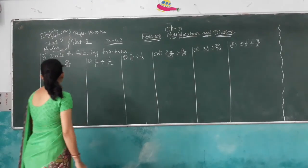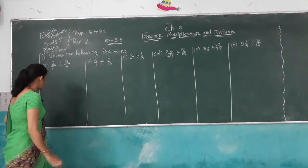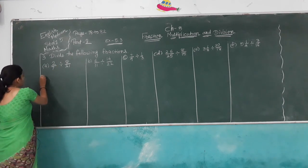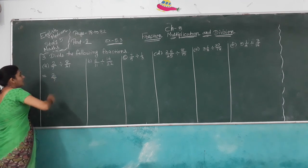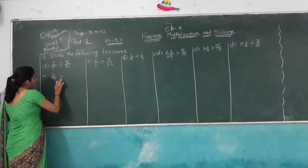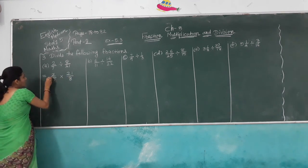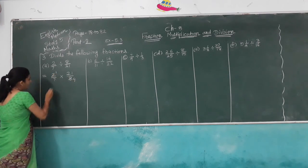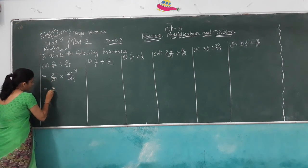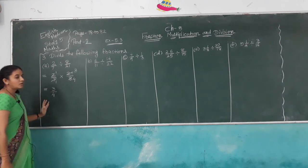Question number 3: divide the following fractions. First problem: 2/7 divided by 8/21. Write 2/7 and multiply by the reciprocal of 8/21, which is 21/8. Cancel: 4 goes into 8 leaving 2 in denominator and 1; and 7 goes into 21 leaving 3. So 3×1 over 1×4 gives the answer 3/4.